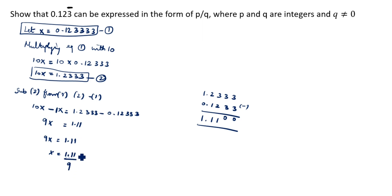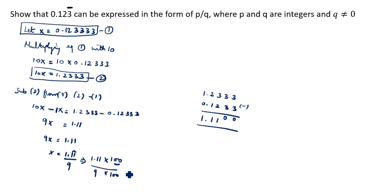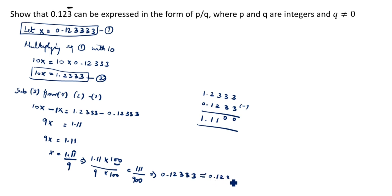You see the decimal point is there, so we remove it. There are two decimal digits, so we multiply and divide by 100. So x equals 1.11 divided by 9, which becomes 1.11 times 100 divided by 100 times 9 — the 100s cancel — giving x equals 111 divided by 900. Doing the long division gives 0.12333, approximately 0.1234. So x equals 111 by 900.